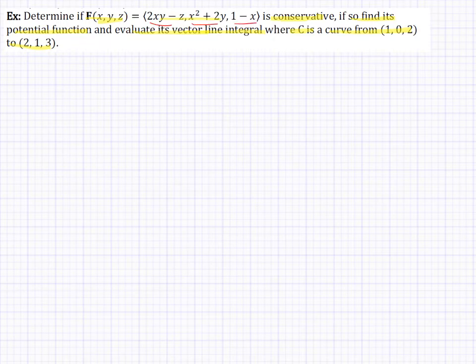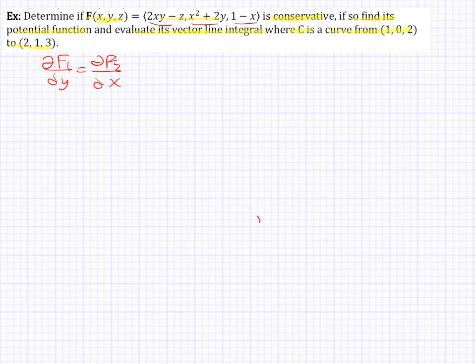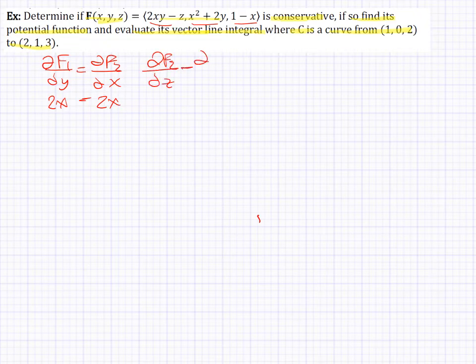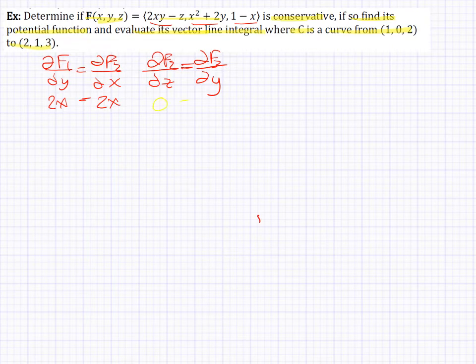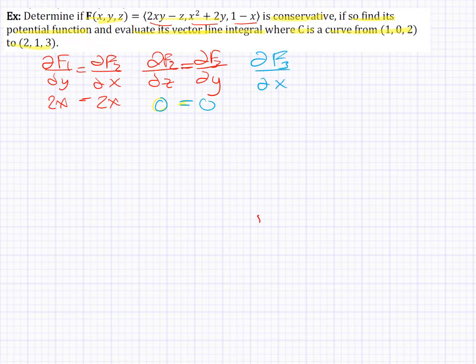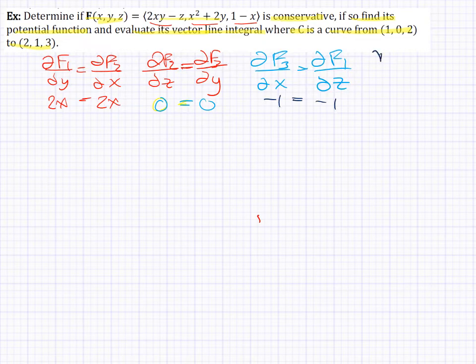Checking if it's conservative using cross-partials: F1 with respect to y is 2x, and F2 with respect to x is 2x — that works. F2 with respect to z is 0, and F3 with respect to y is 0 — that works. The partial of F3 with respect to x is −1, and F1 with respect to z is −1 — that holds. So yes, this vector field is conservative.